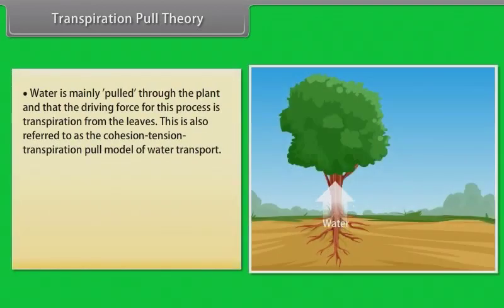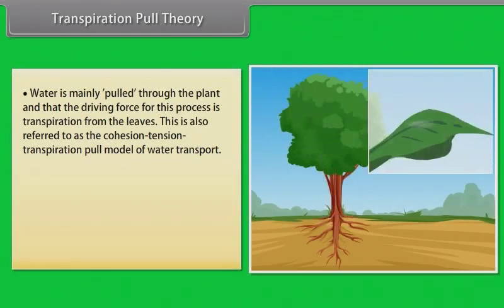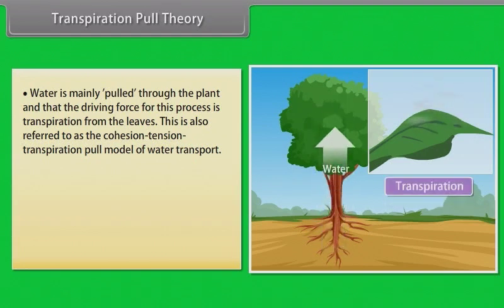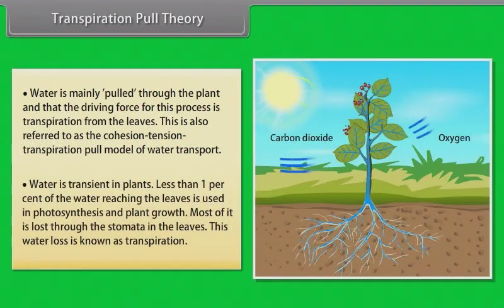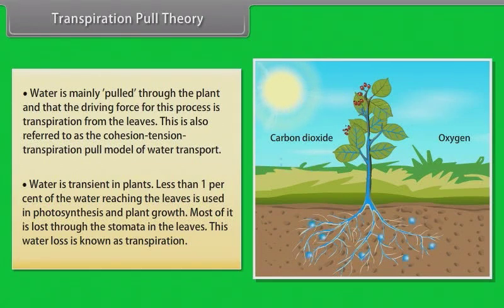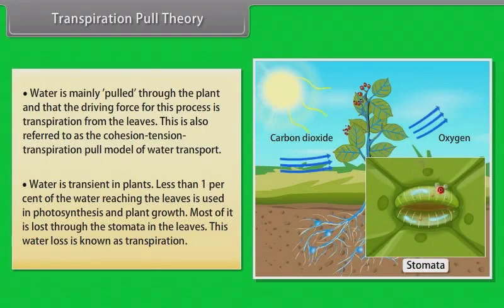Transpiration Pull Theory. Most researchers agree that water is mainly pulled through the plant and that the driving force for this process is transpiration from the leaves. This is also referred to as the cohesion-tension-transpiration pull model of water transport. Water is transient in plants; less than 1% of the water reaching the leaves is used in photosynthesis and plant growth. Most of it is lost through the stomata in the leaves, and this water loss is known as transpiration.